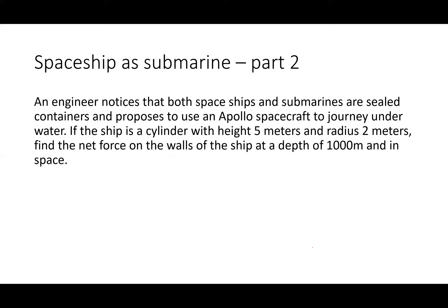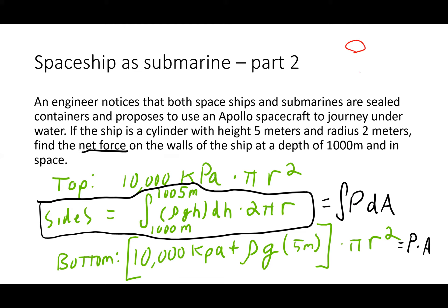To find the net force on the walls, I model the ship as a cylinder and break it into the top, the bottom, and the sides. On the top surface, the net force is the water pressure times pi r squared. The bottom has a slightly higher pressure since it's deeper. For the sides, I really should integrate — 2 pi r around the circumference, then integrate dh to the bottom of the cylinder — because the pressure changes with depth and it can't just be treated as pressure times area.